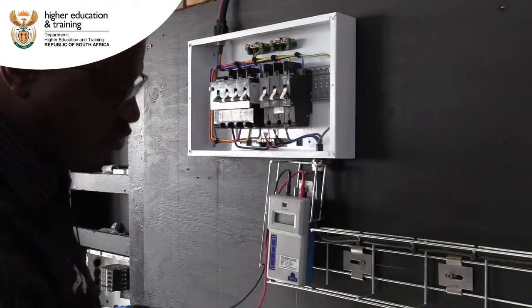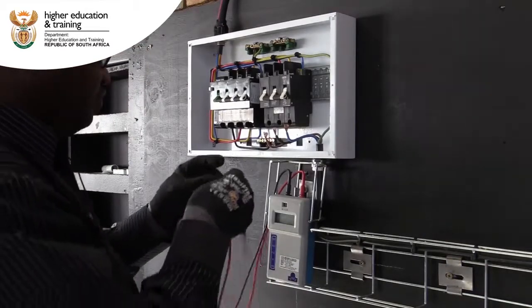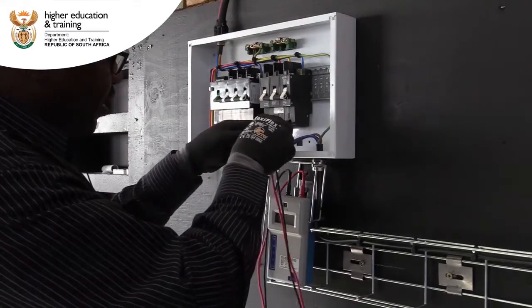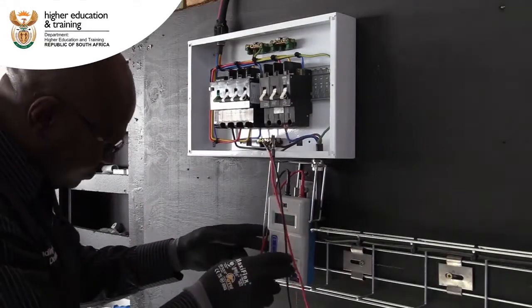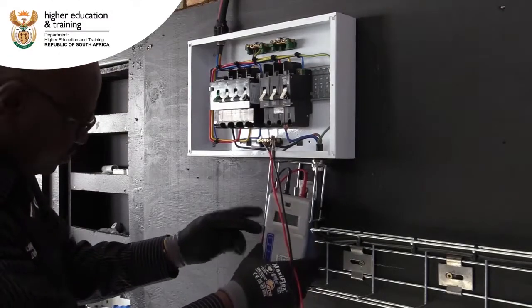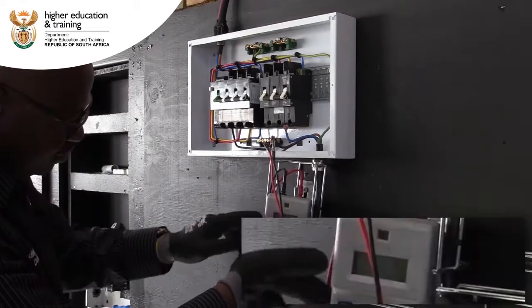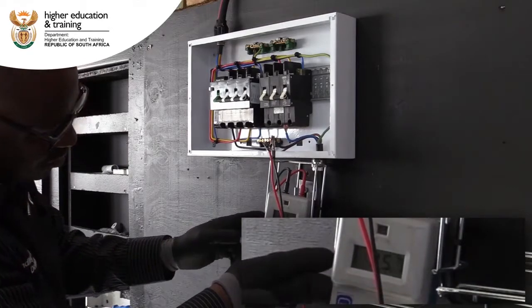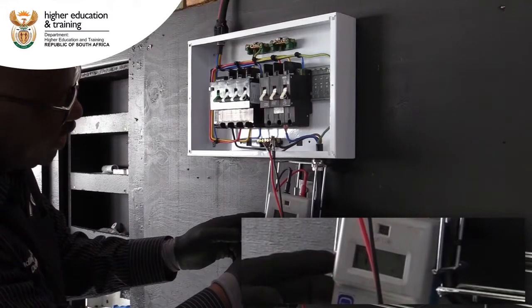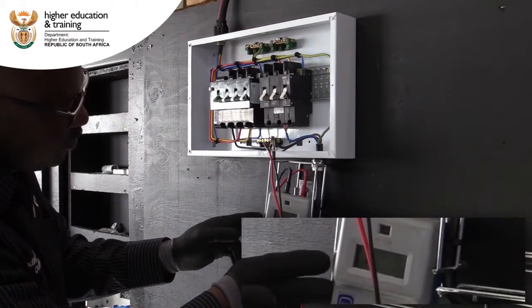Using our insulation tester, test between line 1 and line 2. We are reading infinite between line 1 and line 2. It means there is no short circuit.